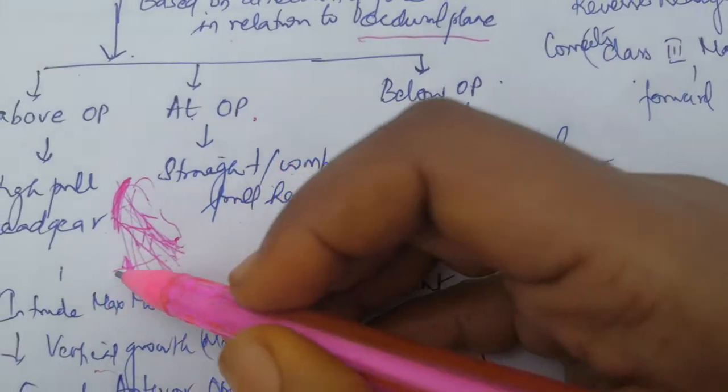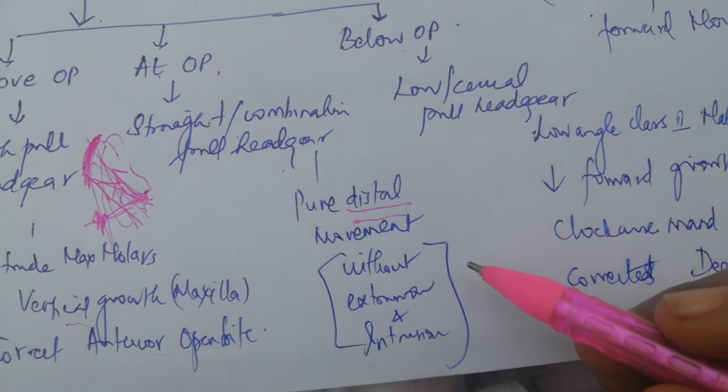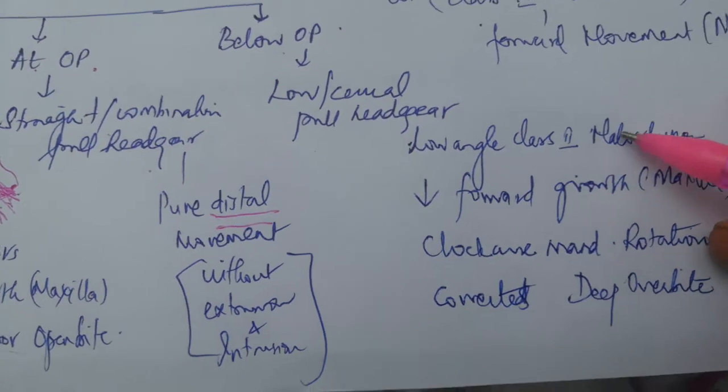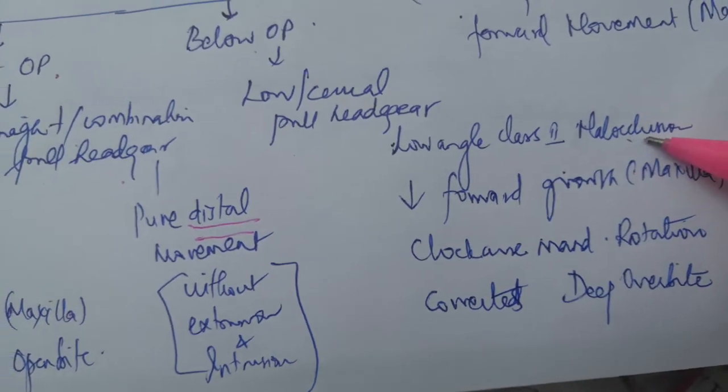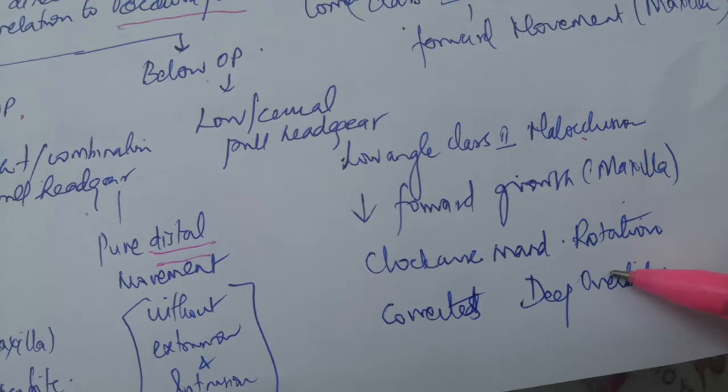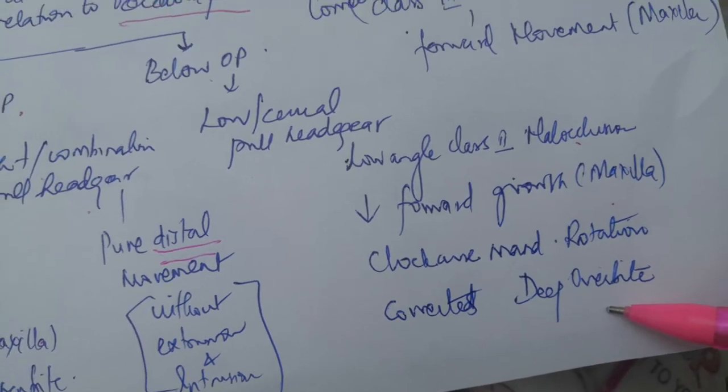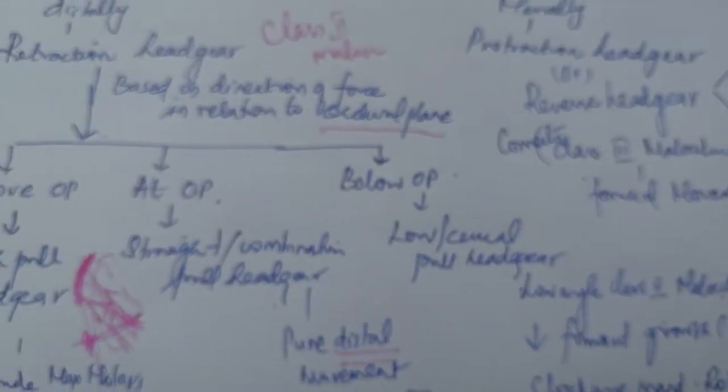If it is below the occlusal plane or cervical pull headgear, only the neck strap will be attached to the intraoral component. In that case, you will be using it in low angle class 2 malocclusion cases. It will reduce the forward growth of the maxilla and cause clockwise rotation of the mandible, so it may correct deep bite also.